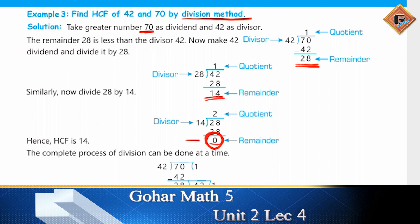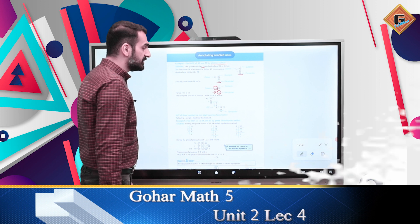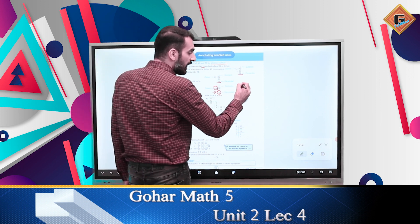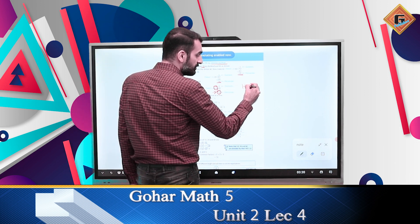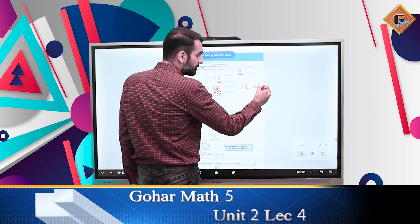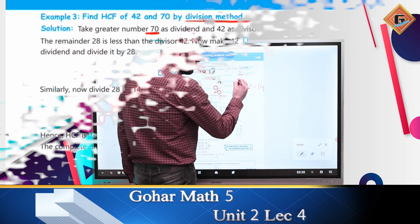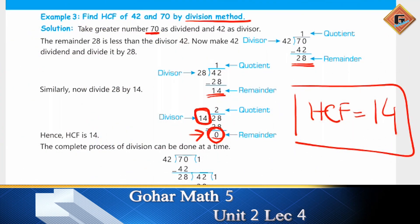When the remainder is 0, the last divisor is the HCF. You can use the same method for any numbers. Now if we have three numbers to find the HCF, the procedure is the same, only the numbers are three.